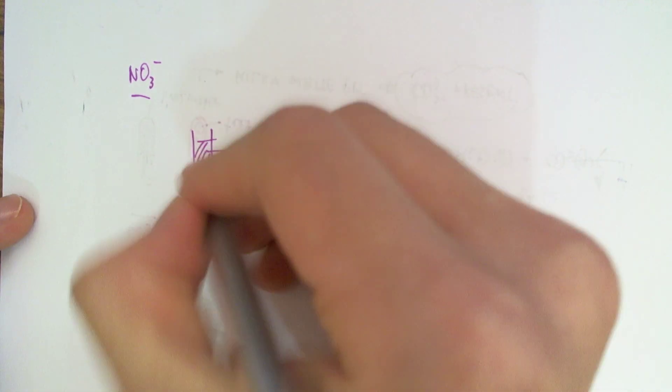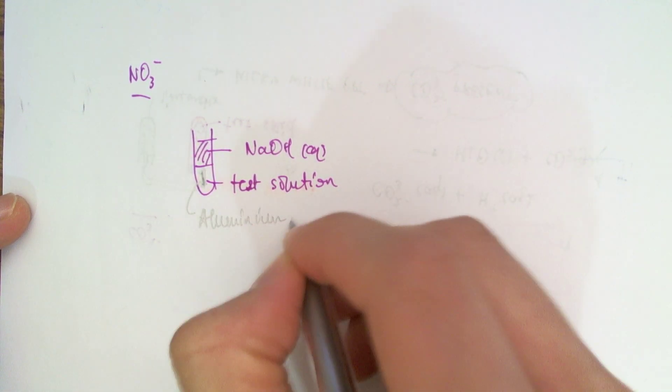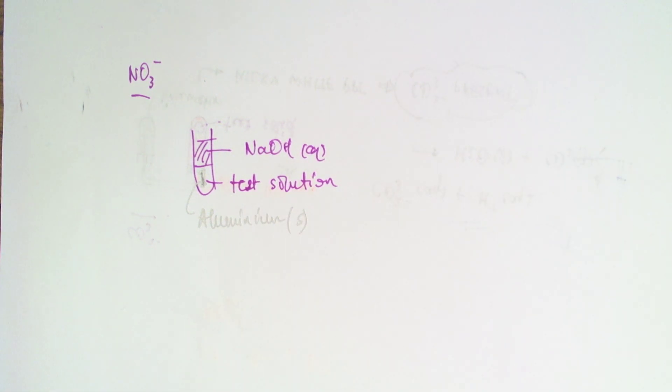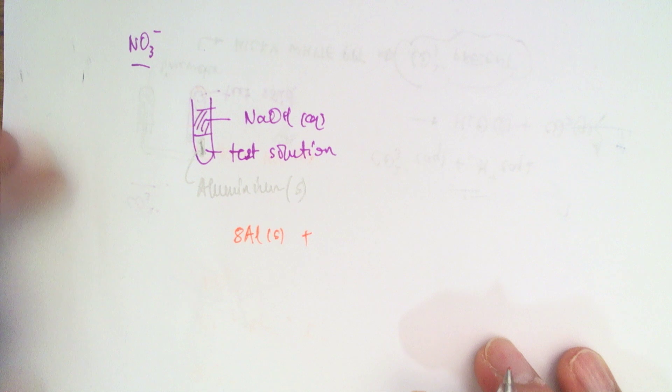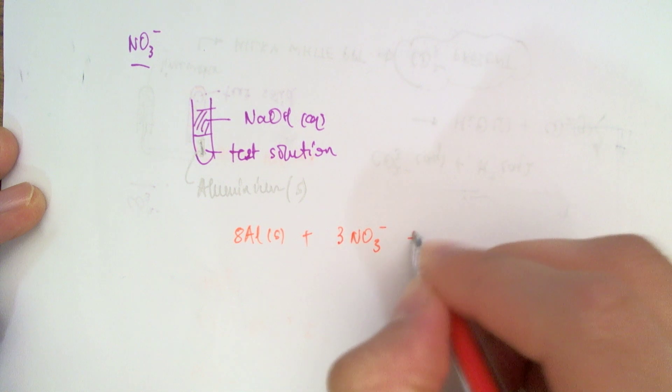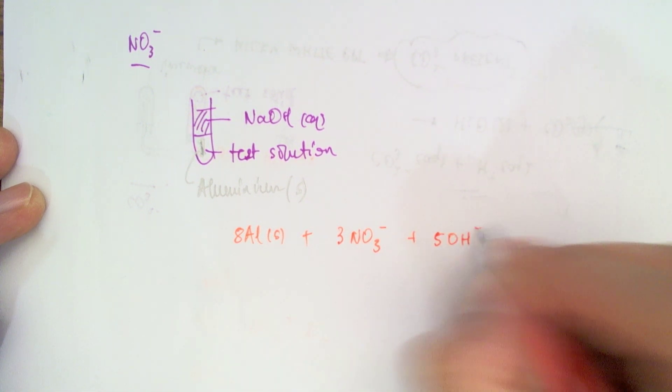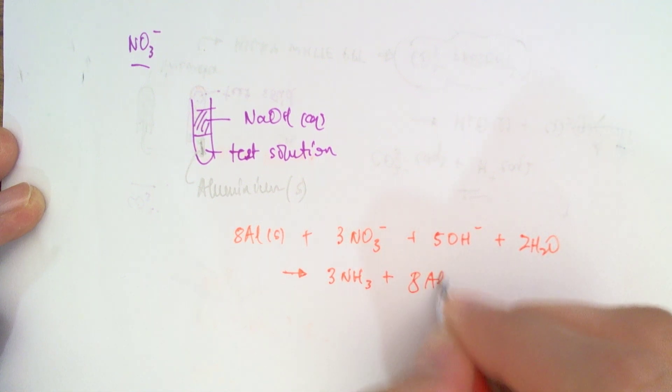And into this, I do something slightly different here. I'm going to put a strip of aluminum. The reason for doing so is because aluminum is a really strong reducing agent. And what that aluminum is going to do is it's going to reduce the nitrate, if it's present, into ammonia, which we can then test using a litmus paper. Let me write the equation down here.